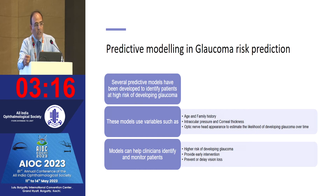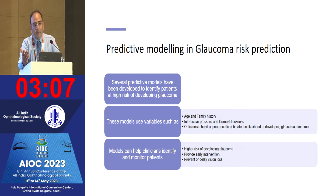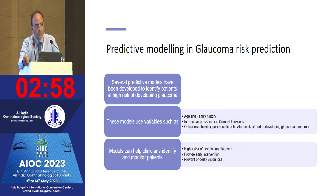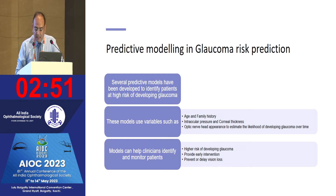These glaucoma models use variables such as age, family history, intraocular pressure, corneal thickness, and optic nerve head appearance to estimate the likelihood of a patient developing glaucoma over time. This can help identify higher-risk patients so that clinicians can provide early intervention and prevent or delay vision loss.